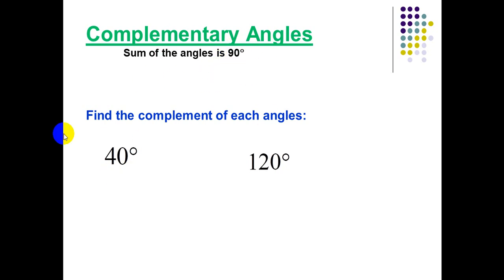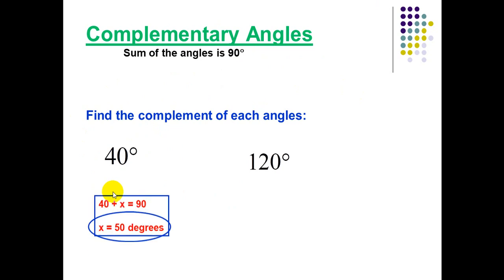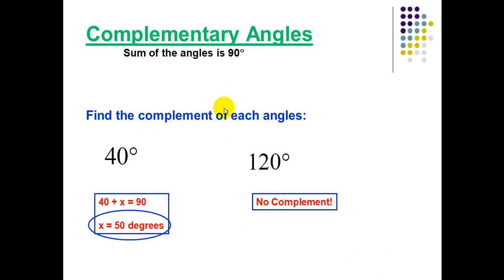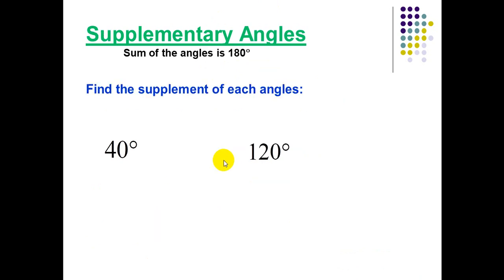Find the complement of each angle. What angle, when added to 40°, gives 90°? We have 40 plus 50 equals 90, so 50° is the complement of 40°. For 120°, there is no complement because there is no way to add any number to 120° to get 90° — since 120° is greater than 90°.